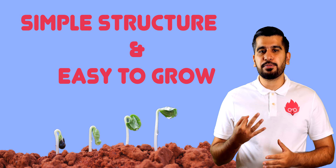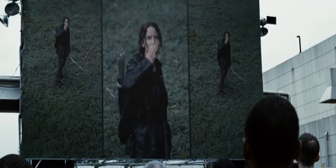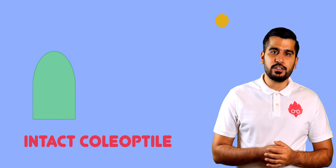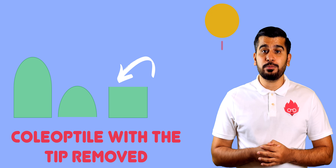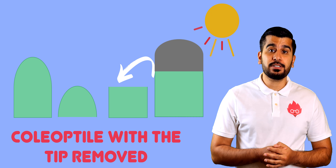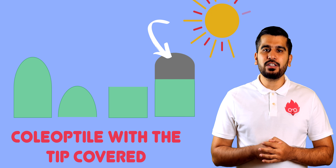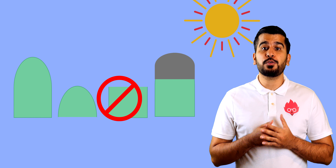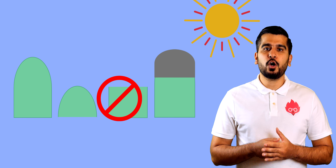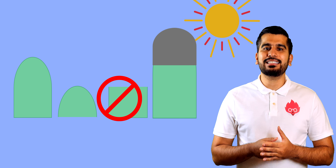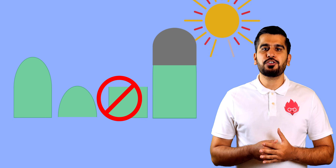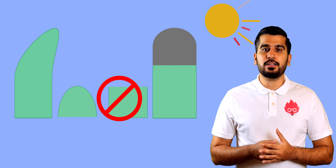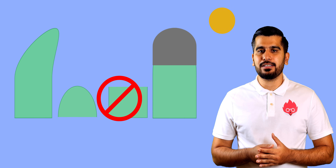Darwin set up three coleoptiles: an intact coleoptile, a coleoptile with a tip removed, and a coleoptile with the tip covered. He found that the coleoptile with the tip removed showed no growth or bending. The coleoptile with the tip covered showed growth but no bending. The intact coleoptile grew in the direction of the light stimulus.